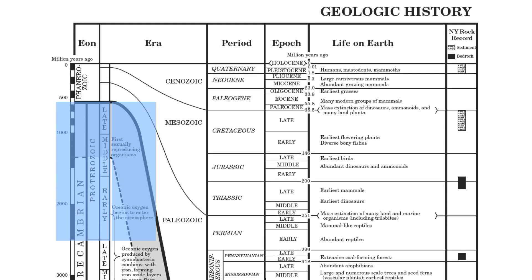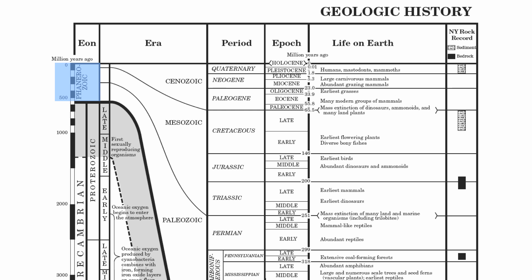Mid to late Precambrian — the Proterozoic — the big thing here is that oceanic oxygen begins to enter the atmosphere and organisms start to reproduce sexually. There's a major boundary between the Precambrian and the Phanerozoic because of two reasons: oxygen, and the fact that animals began to reproduce sexually — a big change within the evolution of our species. The Phanerozoic began about 550 million years ago.